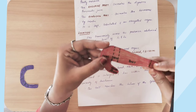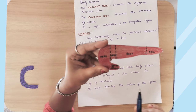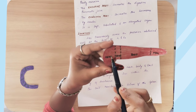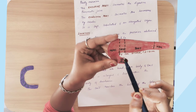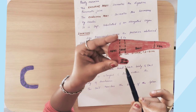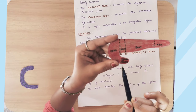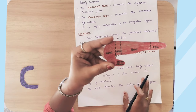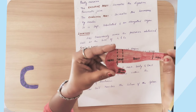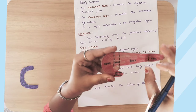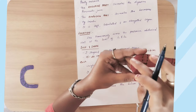The pancreas is divided into four parts: head, neck, body, and tail. The head has an additional projection called the uncinate process. These are the four main divisions of the pancreas.